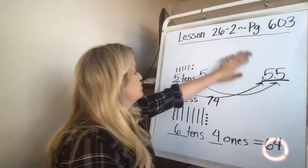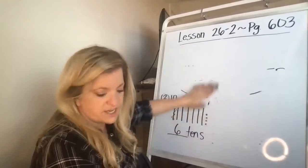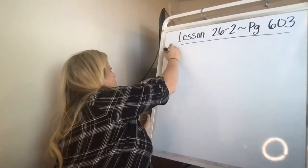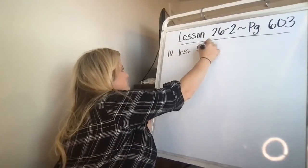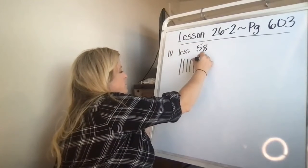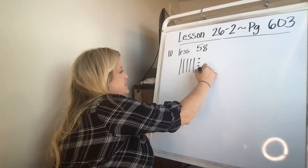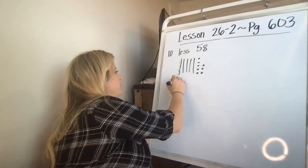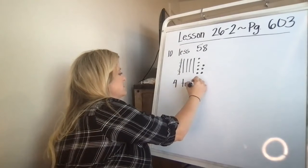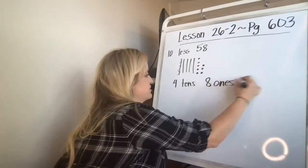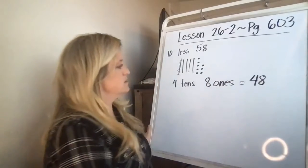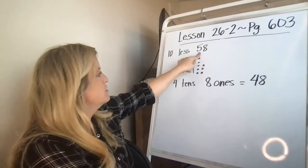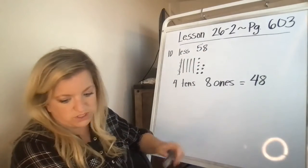Number three says, what is 10 less than 58? 10, 20, 30, 40, 50, and then 1, 2, 3, 4, 5, 6, 7, 8. 10 less than 58, I'm going to cross out one of these. Now I have four tens, eight ones. The ones place never changes. And that equals 48. So all that's doing when I take away a 10 is I'm taking one away from here, zero away from the eight. I'm not taking any eight ones away.